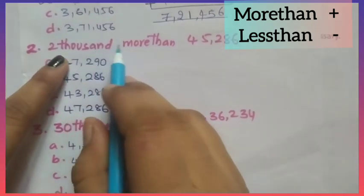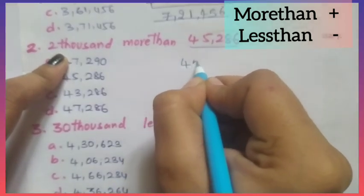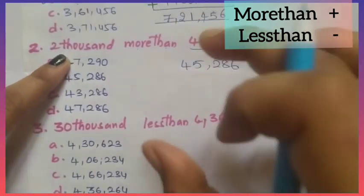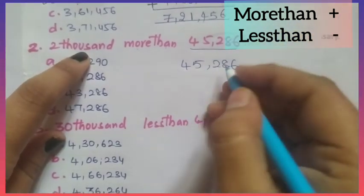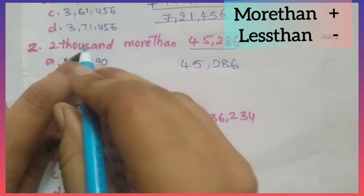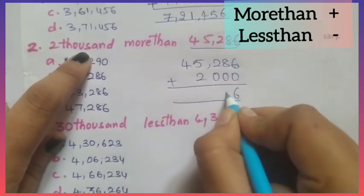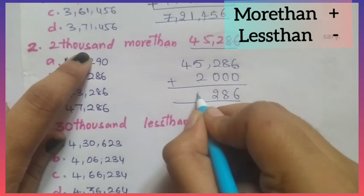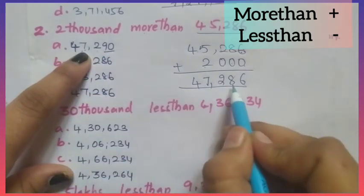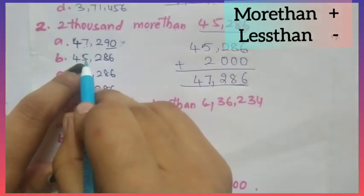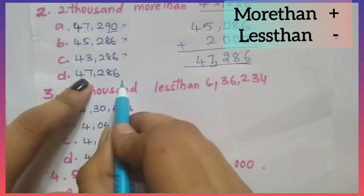Second question: 2,000 more than 45,286. Write 45,286 and add 2,000. In the exam, do this on rough paper. 6+0=6, 8+0=8, 2+0=2, 5+2=7, 4 stays. The answer is 47,286. Check against the options — 47,286 is the correct one.